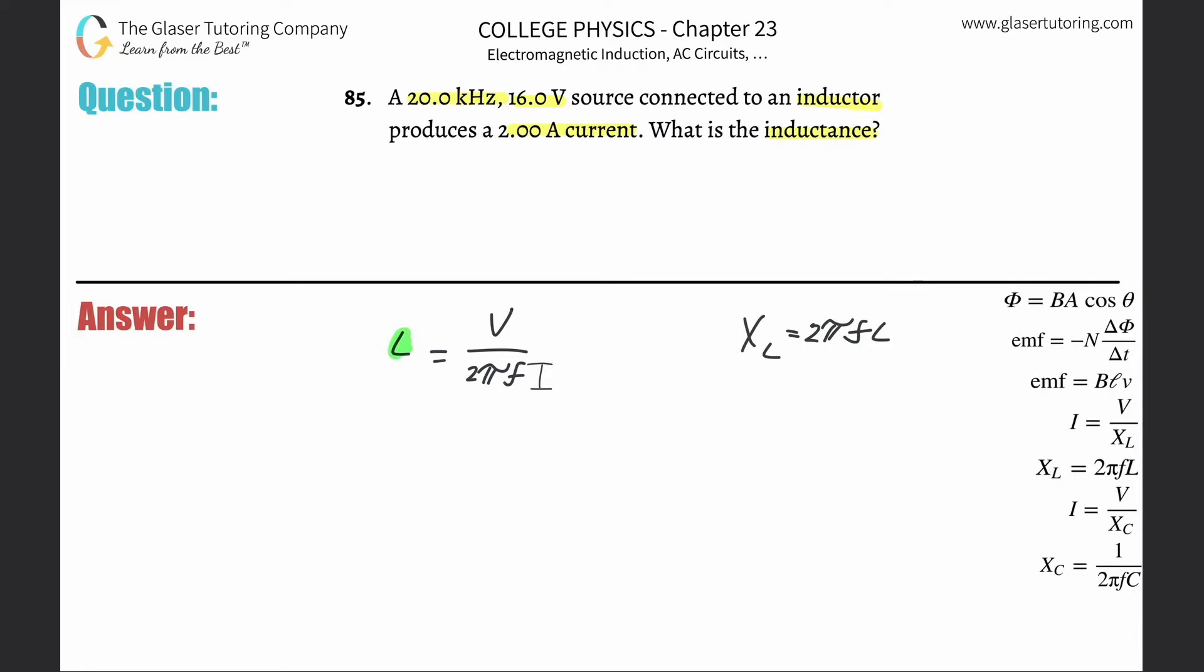To find the inductance, we need three things: voltage, frequency, and current. We have them, so we plug it in. This is 16 volts divided by 2π multiplied by the frequency. They gave it as kilohertz, but we need hertz, so that's 20 times 10 to the third. The current is 2 amps.